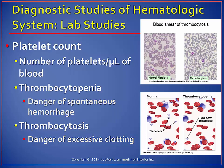Platelet transfusions are not usually indicated until a platelet count is below 10,000 to 20,000, unless the patient is actively bleeding. If the cause is accelerated platelet destruction by drugs, then they need to stop the drug. If immune-mediated, they may need corticosteroids, a splenectomy, or IVIG.